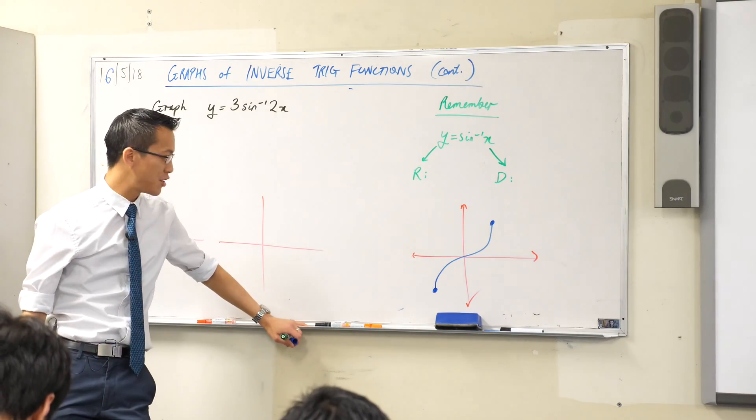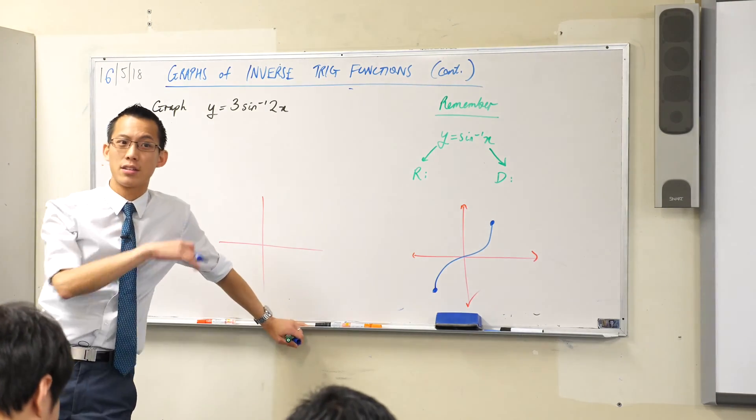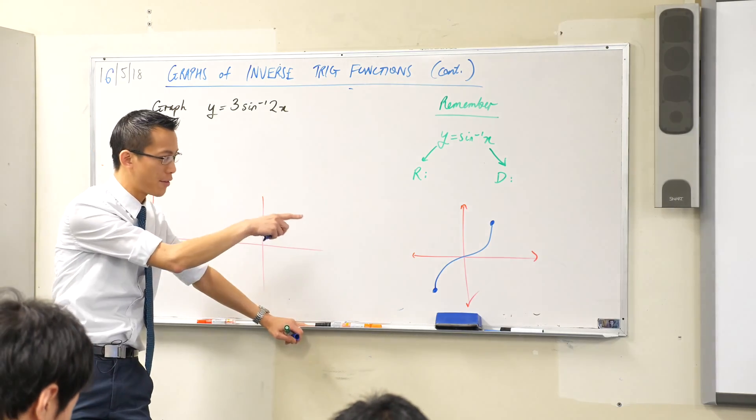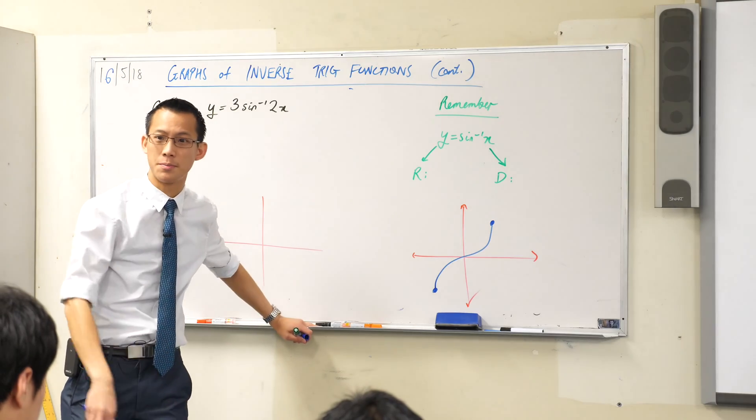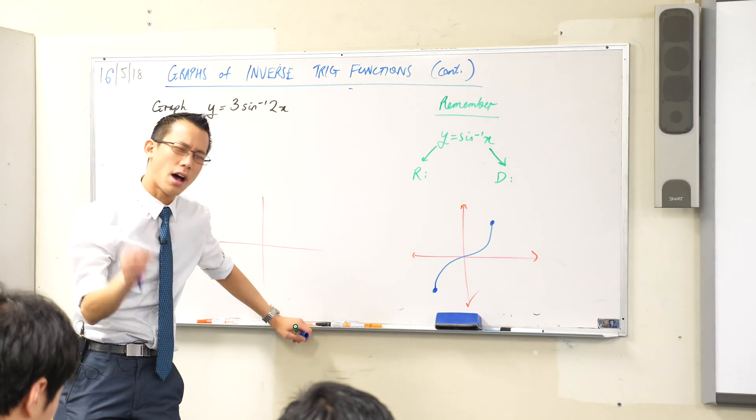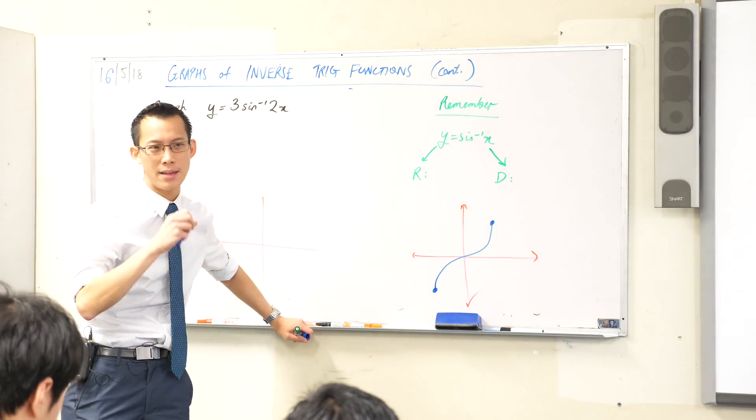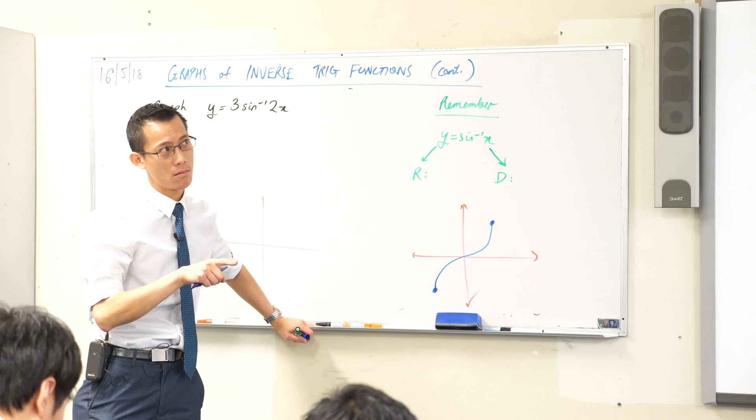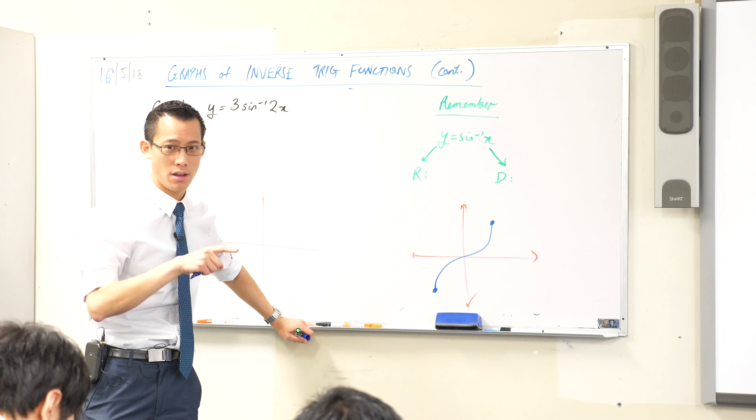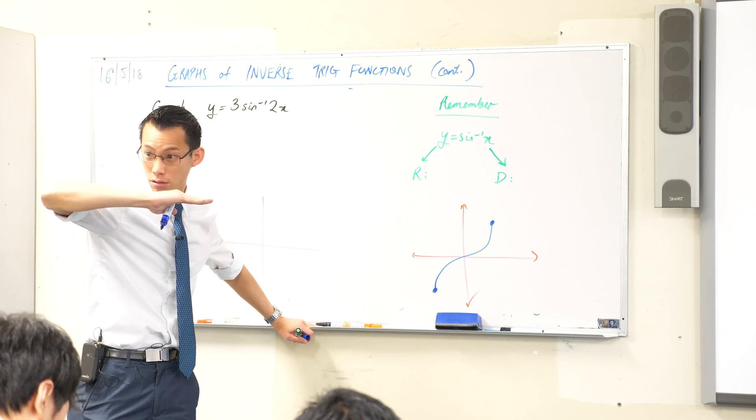A couple of things to remind you of. Remember how the regular sine graph, and cos and tan, the regular sine graph has stationary points here and here. I take it back, tan obviously doesn't. If sine has stationary points, that means that at those stationary points the tangents would be, at a stationary point, the tangent would be horizontal. Do you agree?